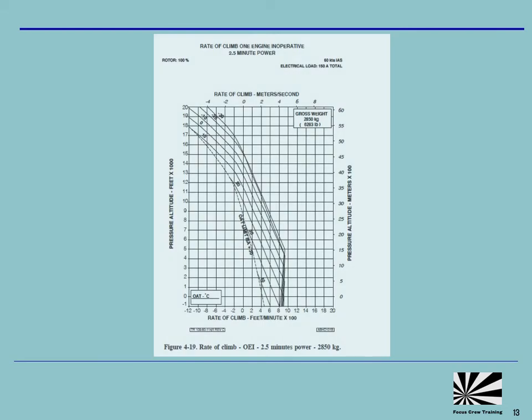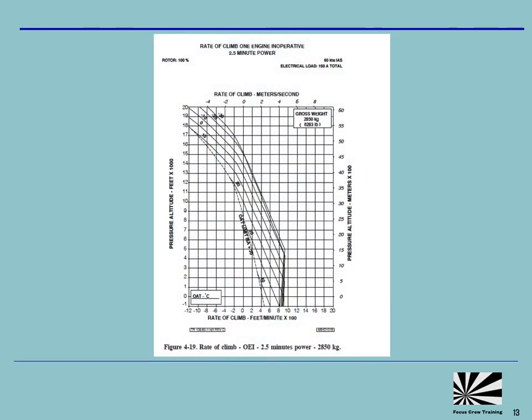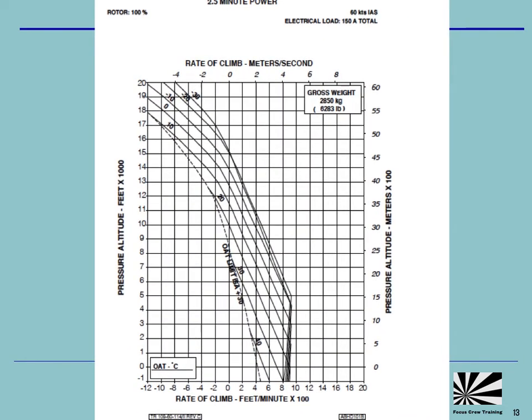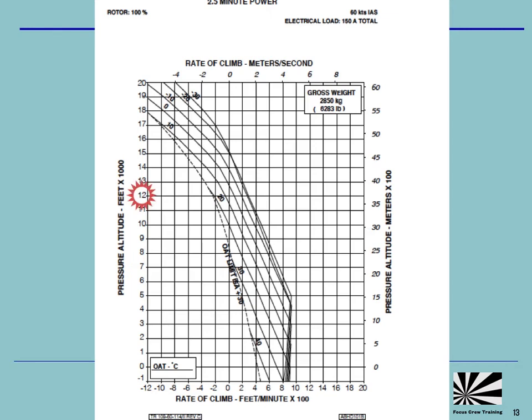So let's consider a helicopter transiting at 12,000 feet pressure altitude at a typical summer temperature of about 20 degrees celsius. So at this altitude and temperature and at this aircraft weight, you can see if the pilots need to shut down an engine for any reason or if the engine fails, the helicopter is unable to maintain altitude.